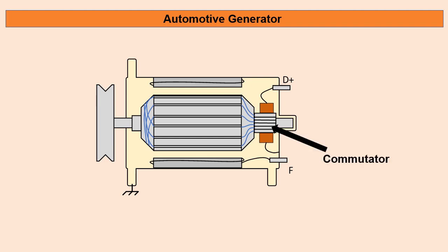The commutator is made of segments connected to each of the windings in the armature. It spins with the armature and is responsible for maintaining a constant DC output.